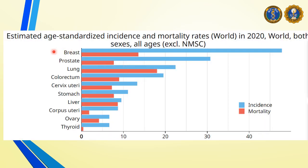Based on global data, breast cancer is the most prevalent type of cancer on both sexes among all ages, followed by prostate cancer — seen in male patients — then lung cancer, colorectal cancer, and cervix uteri cancer — which can only be seen in females. In males, the most prevalent type is lung cancer, followed by prostate cancer, colorectal cancer, and stomach cancer.